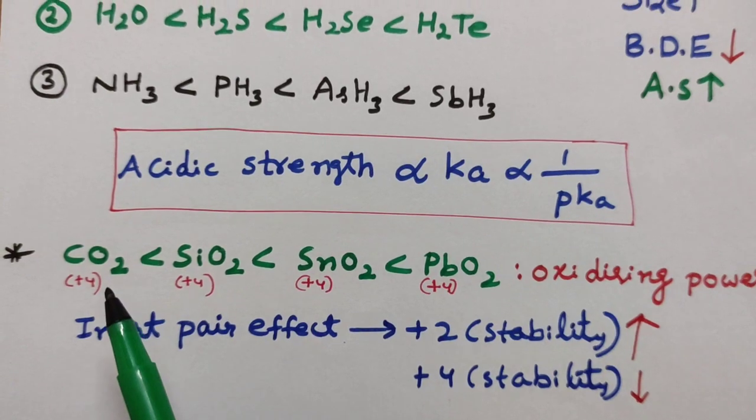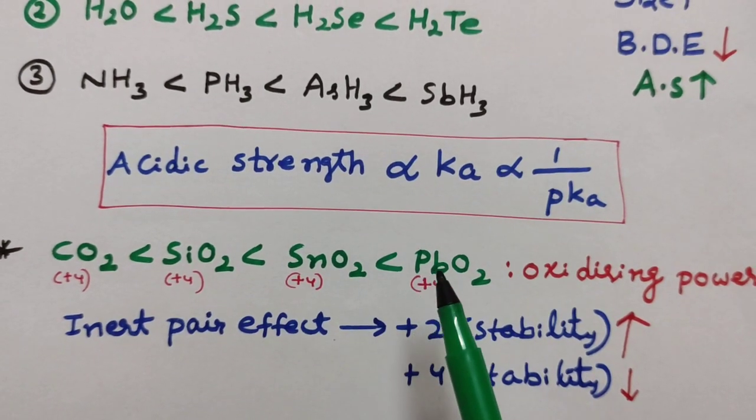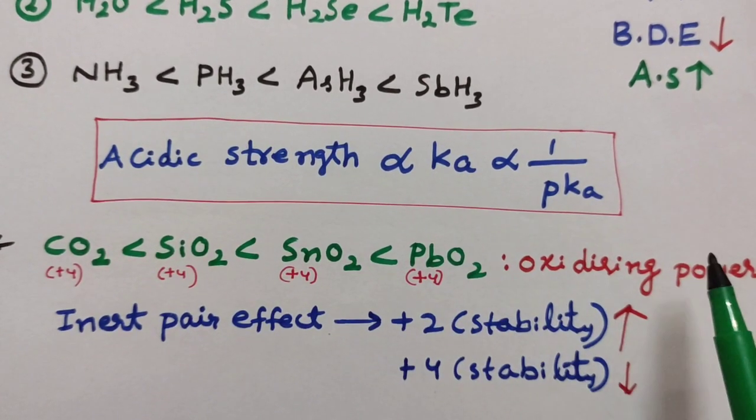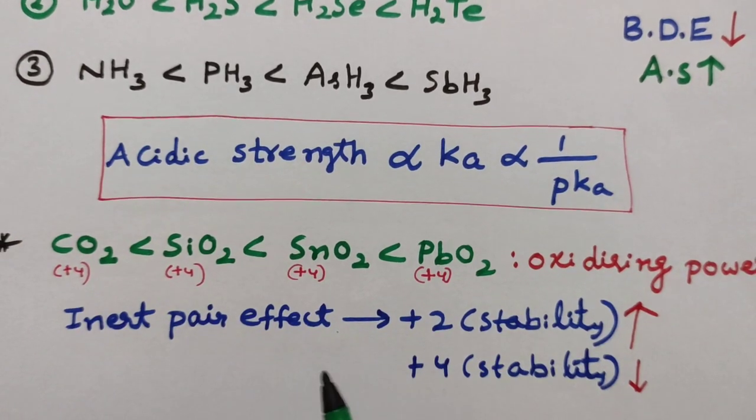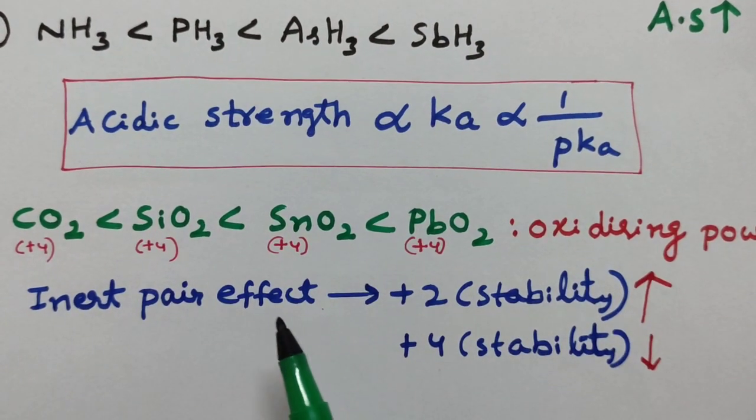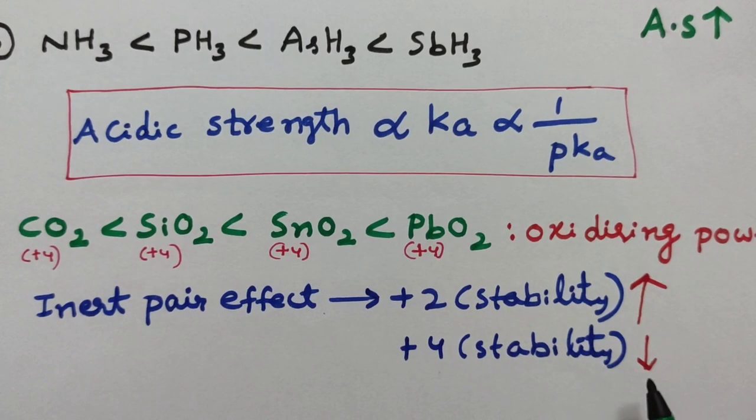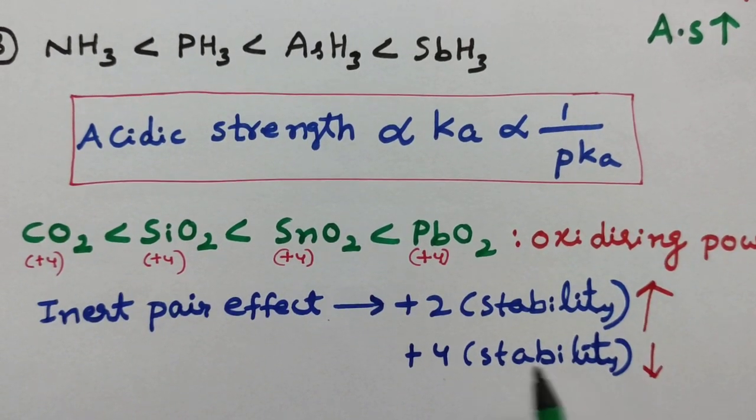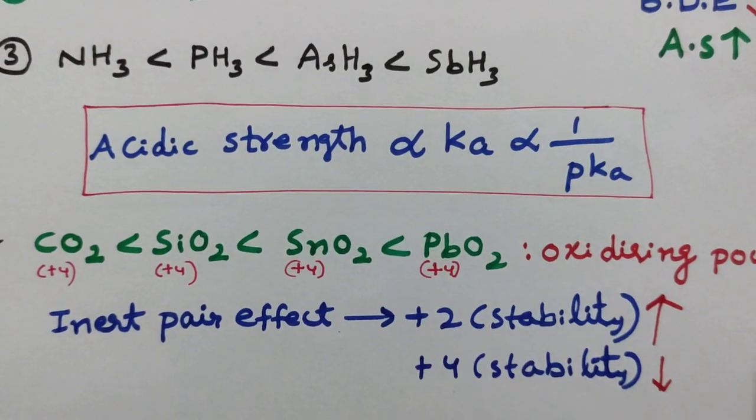Here, 14th group oxides CO2 to PbO2: oxidizing power increases because due to inert pair effect, plus 4 oxidation state stability decreases. That's why oxidizing power increases.